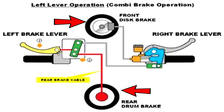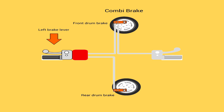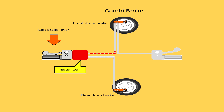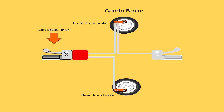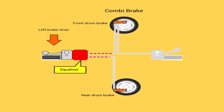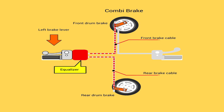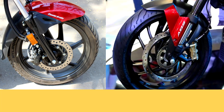In CBS there is a component known as the equalizer — the equalizer is the brain of the braking system. Pressing the left brake activates the equalizer, which distributes the braking force between the front and rear wheels simultaneously, so that you can ride with confidence. Hope you understand the difference between ABS and CBS.